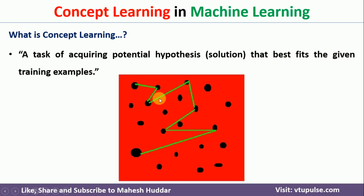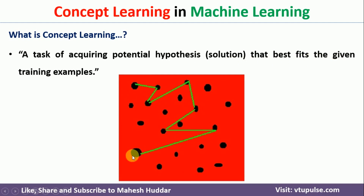This can be represented visually — the dots represent possible or potential solutions. We need to start at one hypothesis and then search from that hypothesis until we find one which will represent the examples, or in other words, the hypothesis that will classify those examples correctly. That is concept learning.